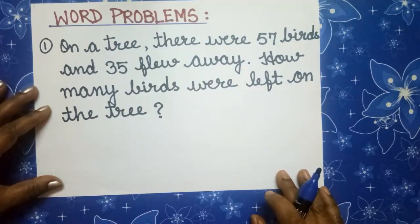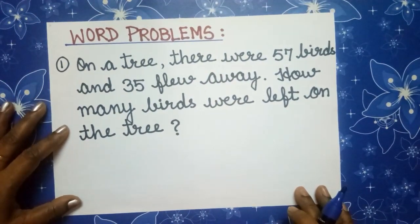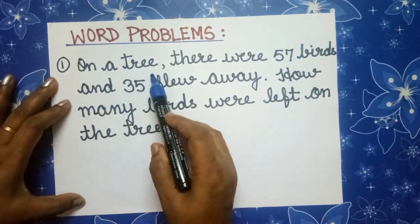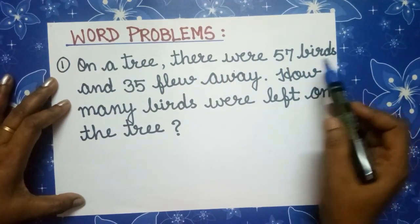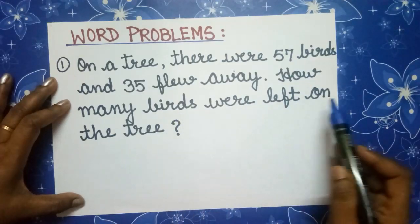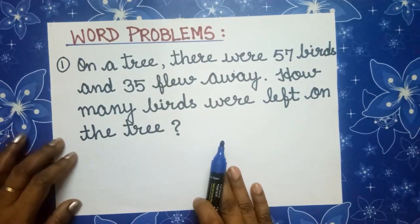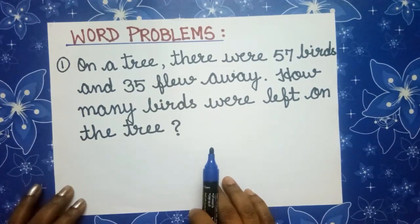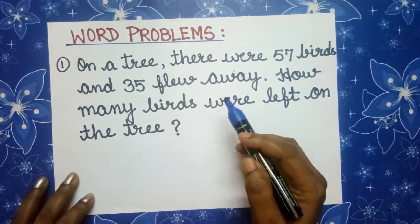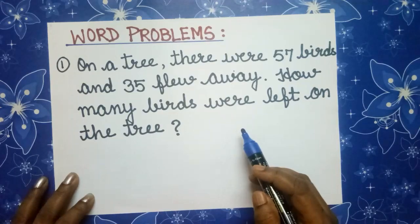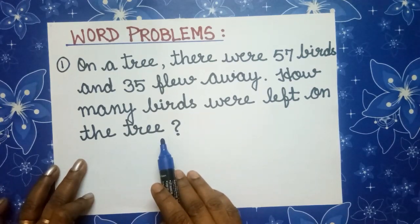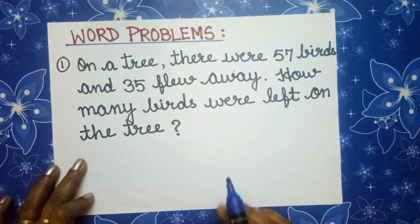Now children, we will come to word problems. Example 1. Like addition, we have to take out the solution. What is the given problem? The number of birds on a tree, some birds flew away. We have to find out how many birds were left on the tree. How can we find this out? By subtracting.